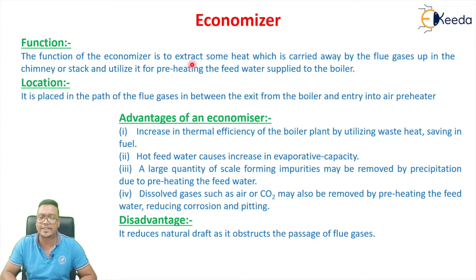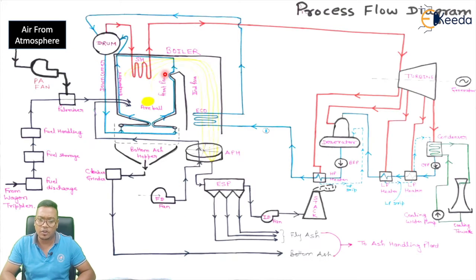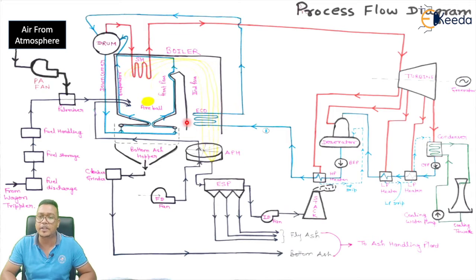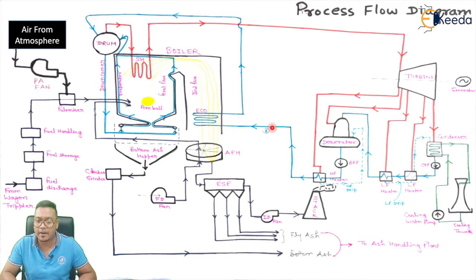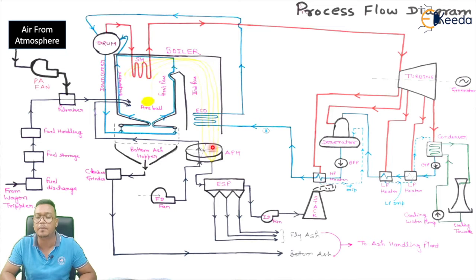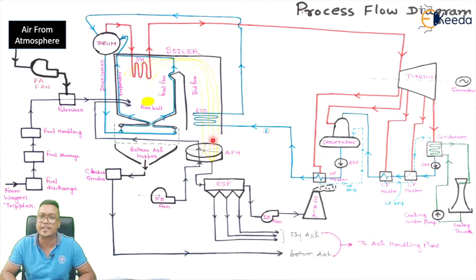The function of the economizer is to extract some heat which is carried away by the flue gas up into the chimney or stack, and utilize it for preheating the feed water supplied to the boiler. If we are not using the economizer for preheating the water, we would have to use extra fuel to preheat the water, and the heat carried by the flue gas would be wasted. So, to recover that waste heat, the feed water is preheated in the economizer. It is placed in the path of flue gas, between the exit from the boiler and entry into the air preheater.